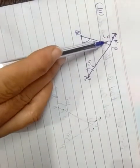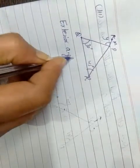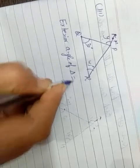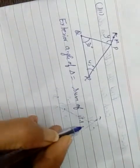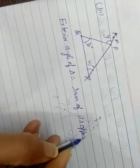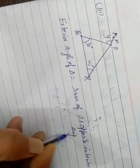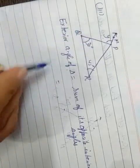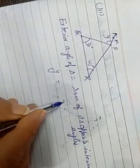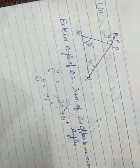Third part of this question: Y is the exterior angle and its opposite interior angles are 30 and 45. Using exterior angle of triangle equals sum of opposite interior angles: Y equals 30 degrees plus 45 degrees, so Y is equal to 75 degrees.